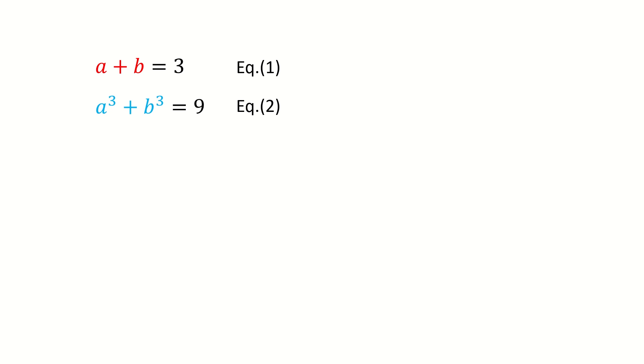So instead of one unknown in the original equation, we convert it into two equations and two unknowns, a and b. Equation one is good because it's just a simple sum. Equation two is not that good, because it's a cubic sum. So the power is too high.